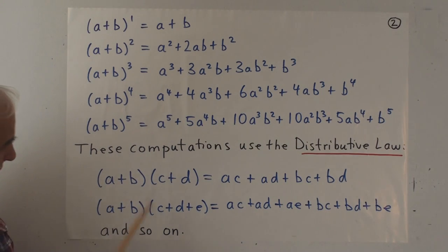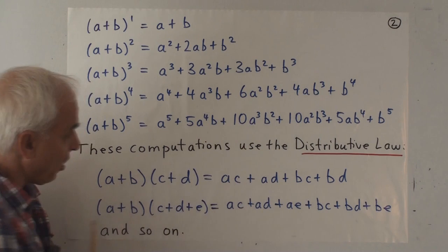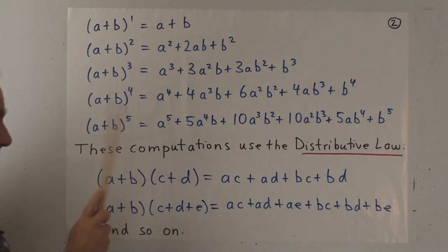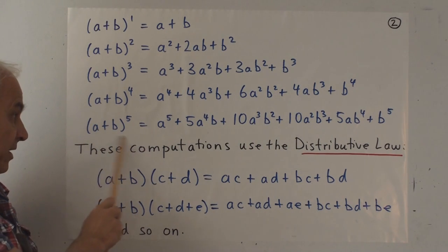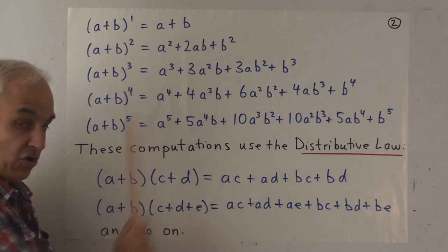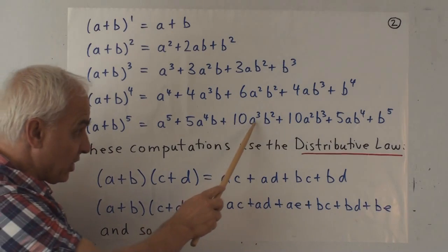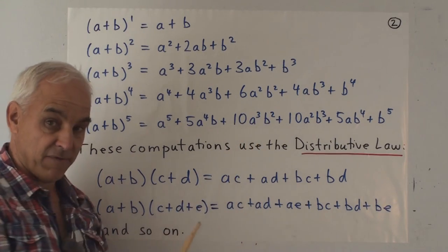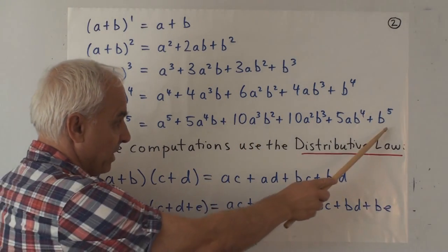And we should observe that the terms that are involved all have powers of a and b that add up to 5, for example, here. So there's an a to the 5th here, an a to the 4th times b, so the total degree is 5. Here an a cubed, b squared, total degree 5, and so on. All the way up to b to the 5th.